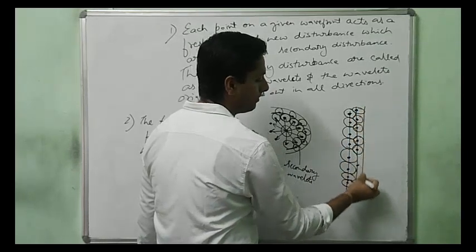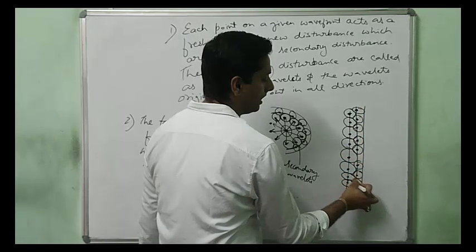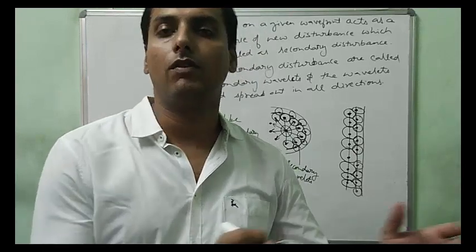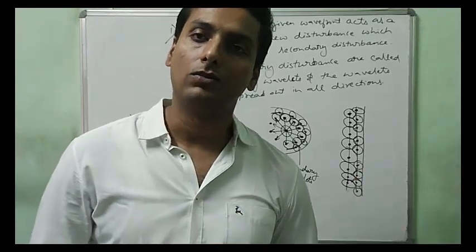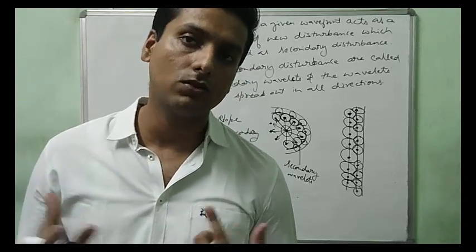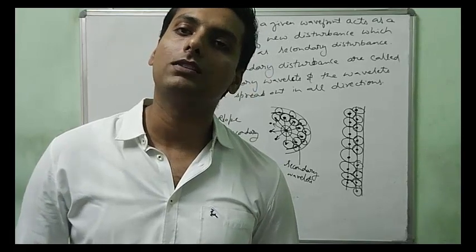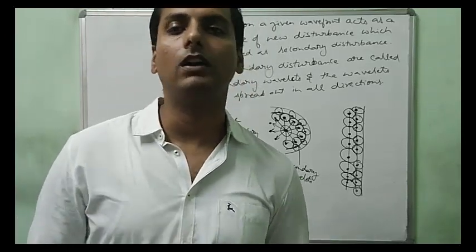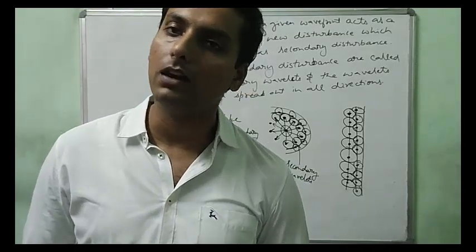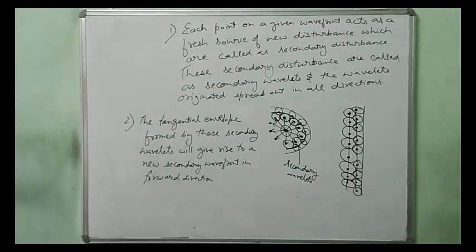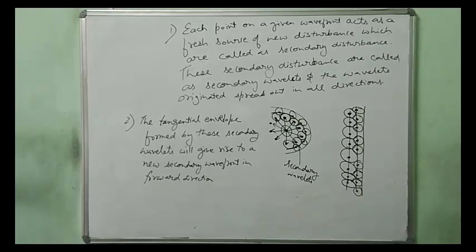Light moves forward through wavefronts and wavelets. Every time a disturbance is caused, each point on the wavefront acts as a fresh source of new disturbance, producing secondary wavelets which when tangentially joined give the shape of the new wavefront — the position the light has traveled to at any later time in the forward direction.